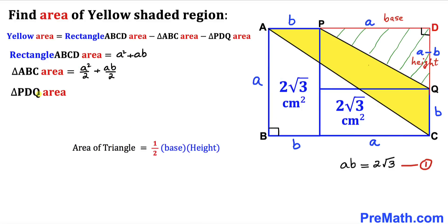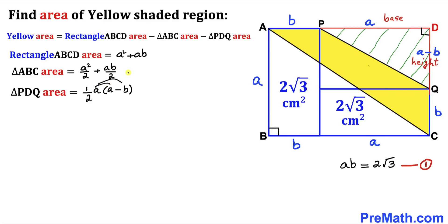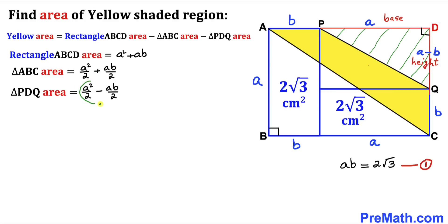Now let's calculate the area of the other right triangle PDQ, whose base is A and whose height is A minus B. So the area of triangle PDQ equals one-half times A times (A minus B). Distributing gives us A squared divided by 2 minus AB divided by 2.